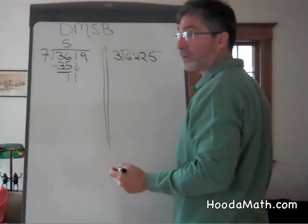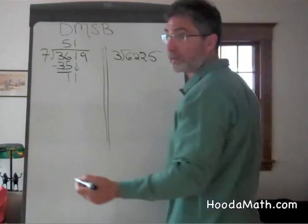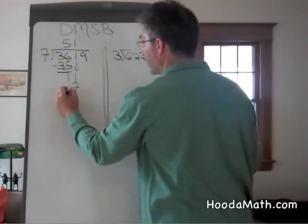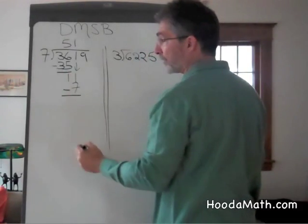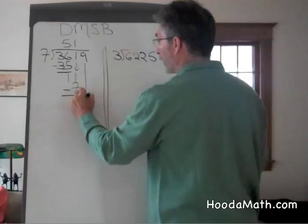7 divides into 11 once. 1 times 7 is 7. We subtract. 11 take away 7 is 4. And now we bring down the 9.